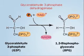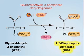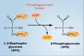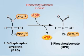Glyceraldehyde-3-phosphate dehydrogenase oxidizes and phosphorylates G3P, producing 1,3-bisphosphoglycerate, or BPG, and the electron carrier NADH. Phosphoglycerate kinase then catalyzes the removal of phosphate as ATP, making 3-phosphoglycerate, 3PG.